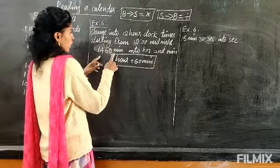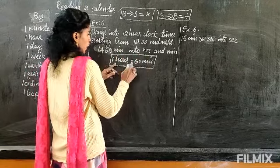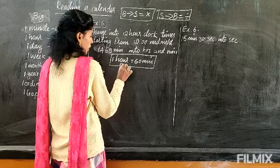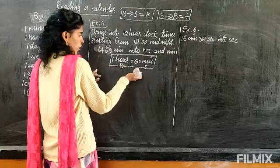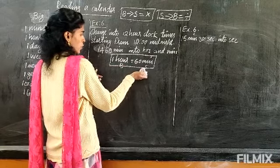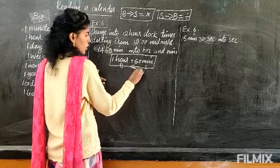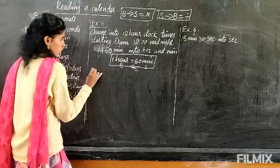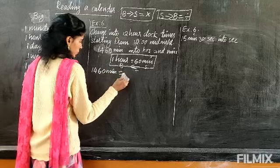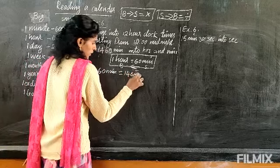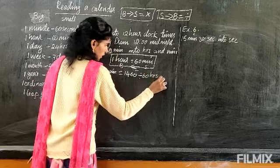We are going to convert minutes into hours. If you compare minute and hour, minute is small and hour is big. So minute to hour is from small to big, which means we have to divide. So 1460 minutes equals 1460 divided by 60, since we are converting into hours, it will be expressed as hours.